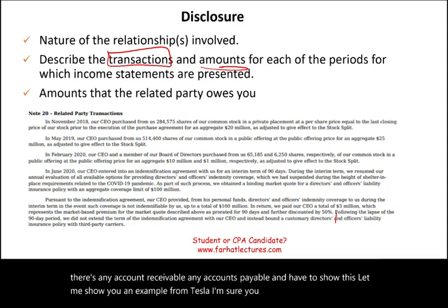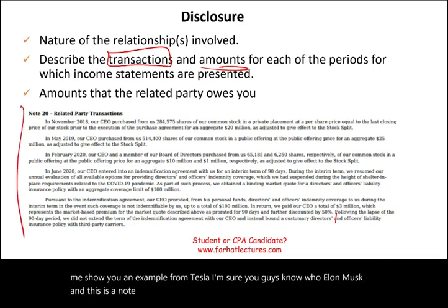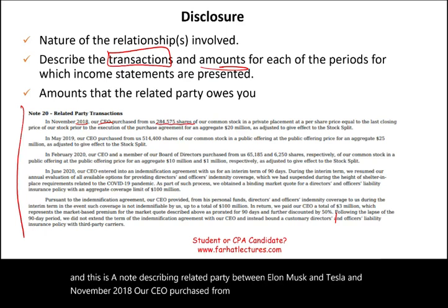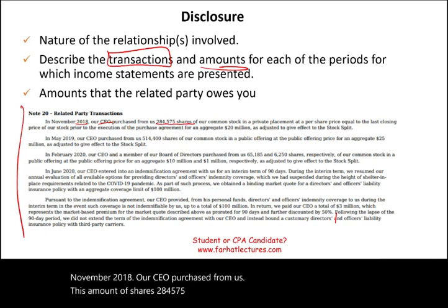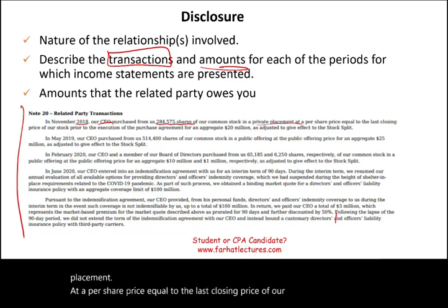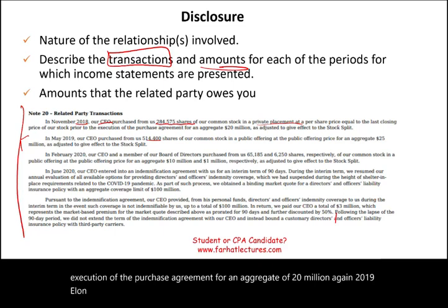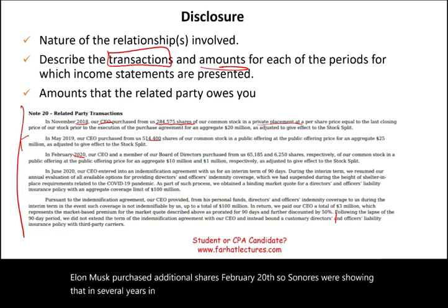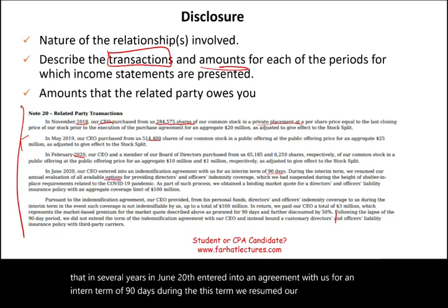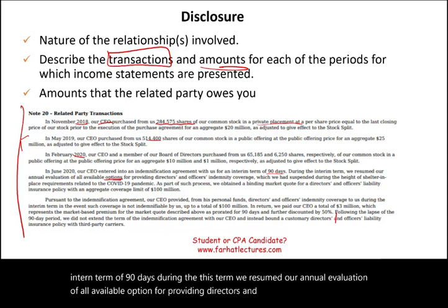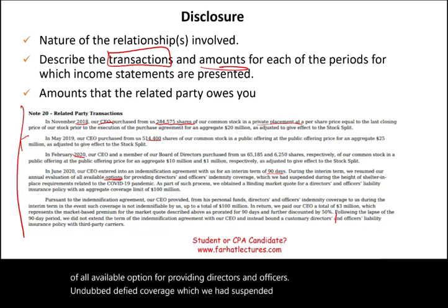I'm sure you know who Elon Musk is. This is a note describing the related party relationship between Elon Musk and Tesla. In November 2018, the CEO purchased 284,575 shares of common stock in a private placement at a per share price equal to the last closing price of the stock prior to the execution of the purchase agreement, for an aggregate of $20 million. In 2019, Elon Musk purchased additional shares. Notice we are disclosing this across several years.